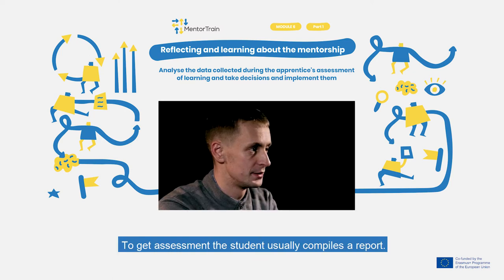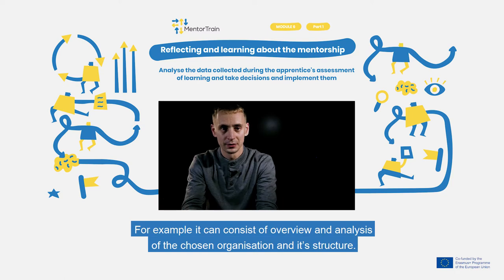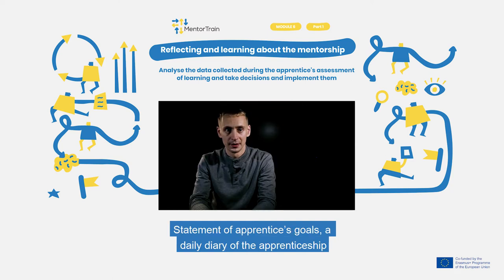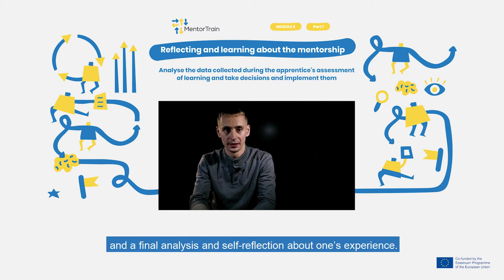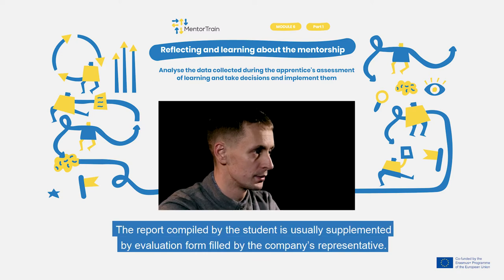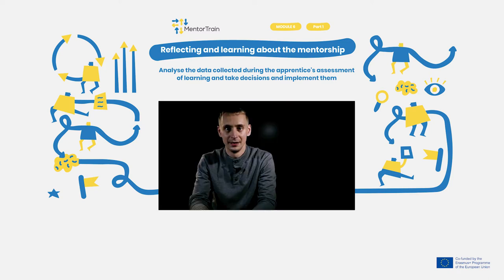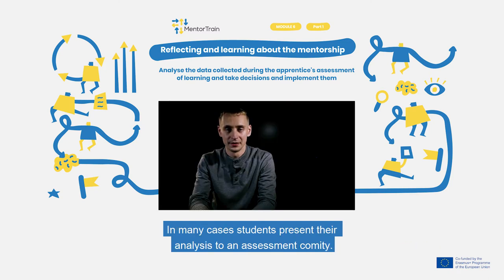To get an assessment, the student usually compiles a report. For example, it can consist of an overview and analysis of the chosen organization and its structure, a statement of the apprentice's goals, a daily diary of the apprenticeship, and a final analysis and self-reflection about one's experience. The report compiled by the student is usually supplemented by an evaluation form filled by the company's representative. In many cases, students present their analyses to an assessment committee.